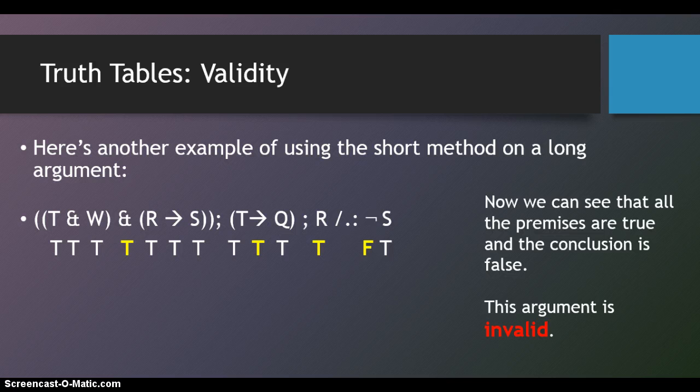Now we can see that all the premises are true, and the conclusion is false. We've constructed a row in which we've stipulated that the conclusion is false, and we were able to force all of the premises to be true without any inconsistency or contradiction. That means there was at least one possible row in that full, long truth table, complete truth table, in which all the premises are true, and the conclusion is false. We've abbreviated that with this shorter method, and we've proven that in fact this argument is invalid.